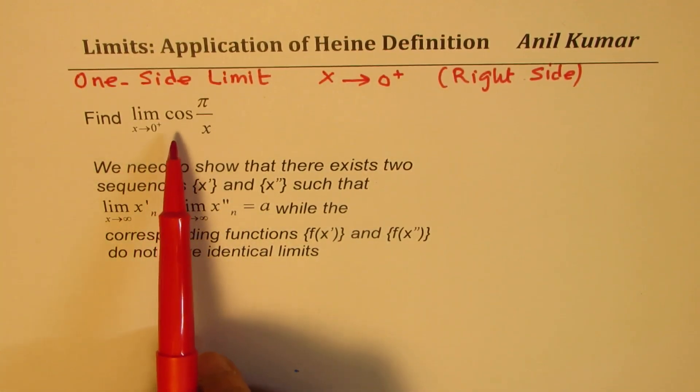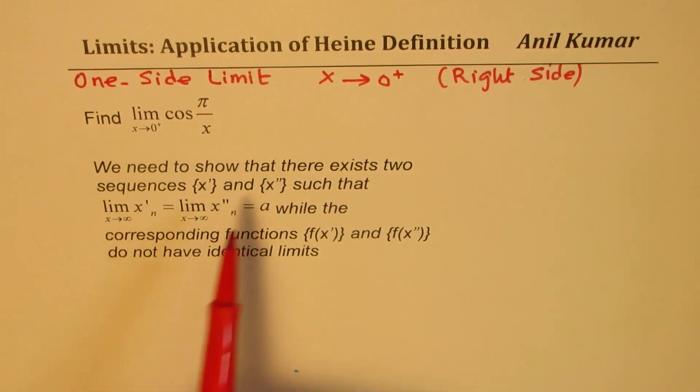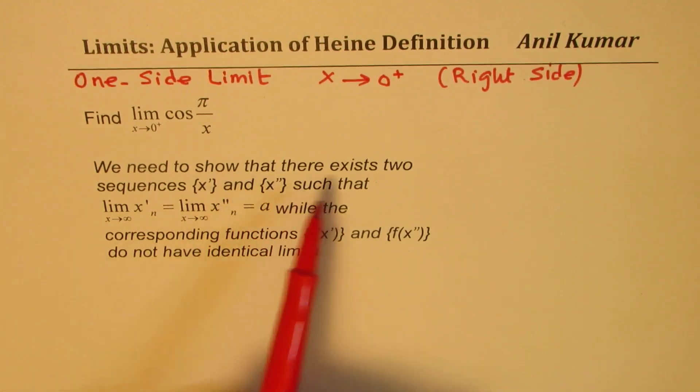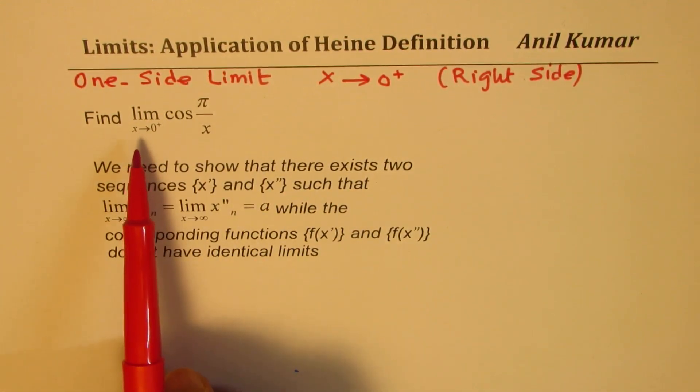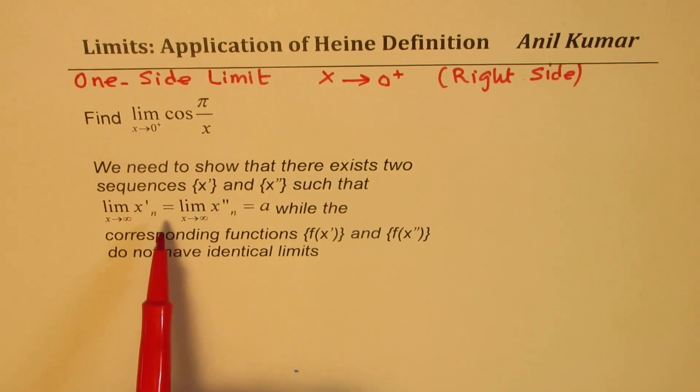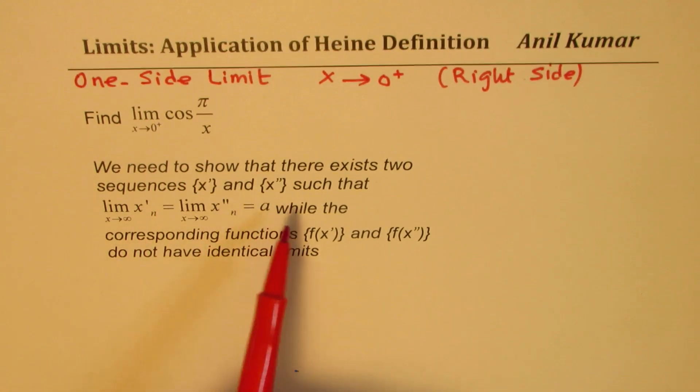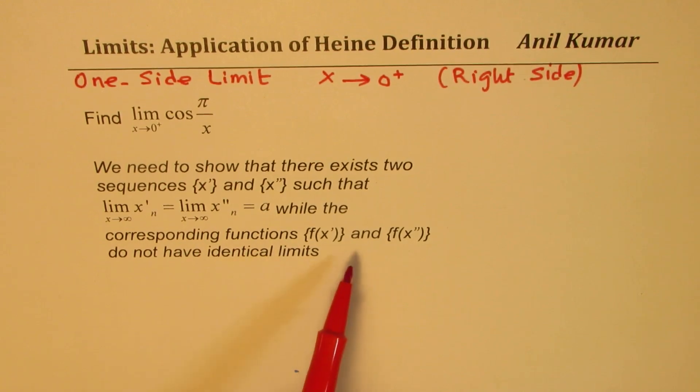We know that this limit does not exist. To prove that it does not exist, what we are going to do is show that there are two sequences which have the same limit, but cos of those sequences, the function for those sequences does not have identical limit.